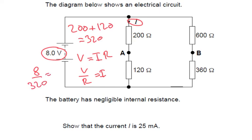So 8 divided by 320. This is going to give us our current. 8 divided by 320, that is equal to 0.025 amps, which is the same as 25 milliamps.